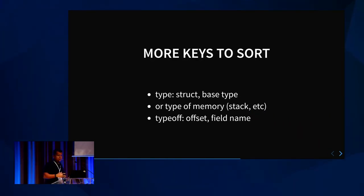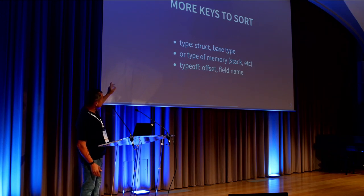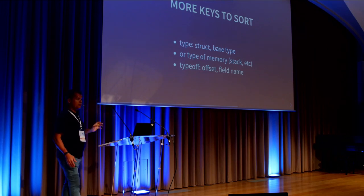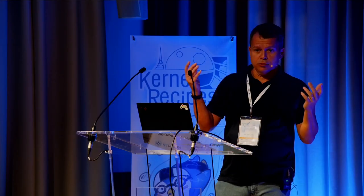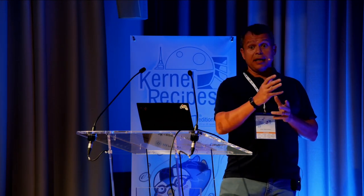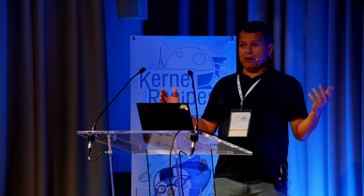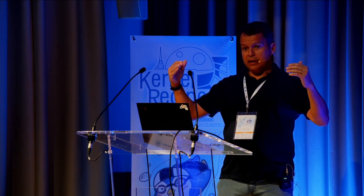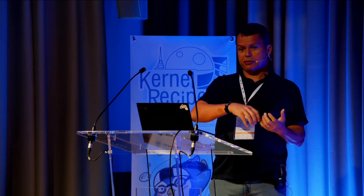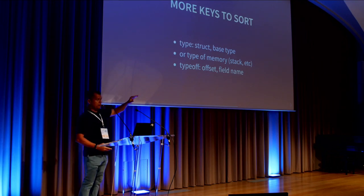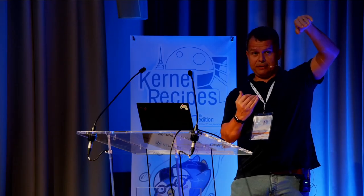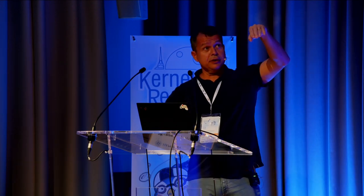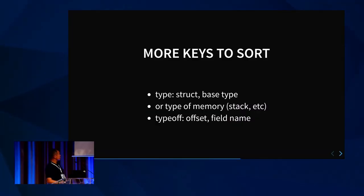It plugs into the perf workflow. You have more sort keys — in addition to CPU, cgroup, PID, etc., you now have 'type' and 'typeoff'. The type could be a data structure like task_struct, inode, etc. Or it could be a kind of access like stack operations. If you have a function called many times, there will be lots of accesses to memory when saving registers to the stack in the prologue and epilogue. So stack ops are sampled as well. Typeoff gives you the offset and field name if it managed to resolve it.